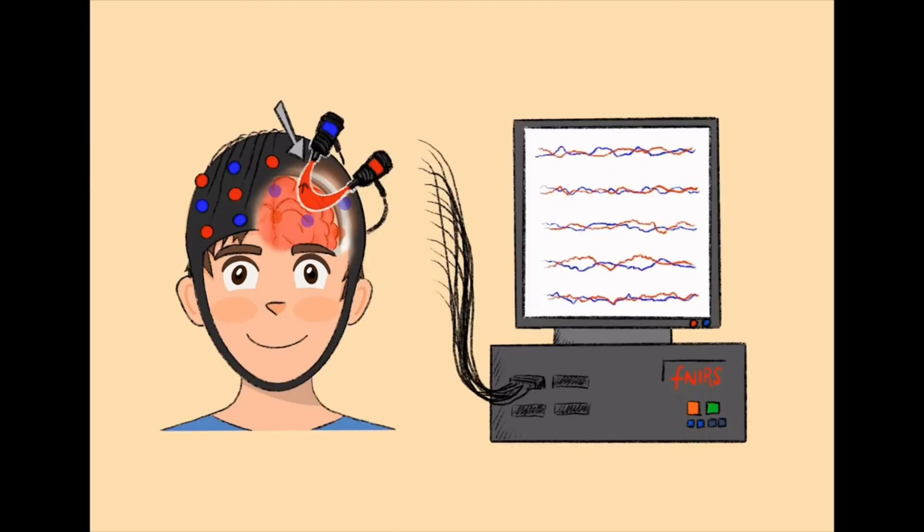This light then travels in a banana-like shape through your skin and your skull until it reaches the outer layer of your brain. Some of the light travels back to the surface of your head, where the blue sensors are. The blue sensors measure the exact amount of light that is coming back.